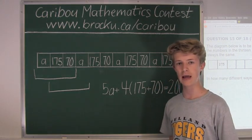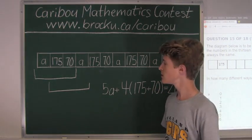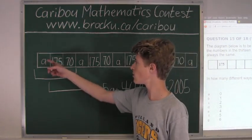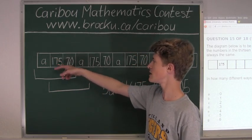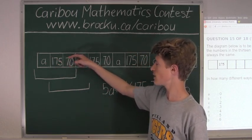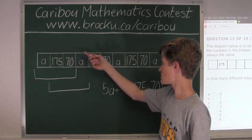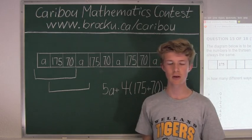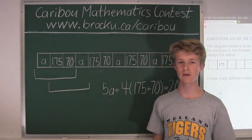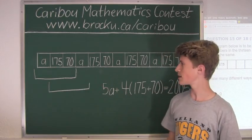So we would know that A could only be one number. So if we know that A can only be one number, 175 is given, and 70 is given, and we know that the sum of the group of three consecutive boxes is always the same, we know that there is only one possible way to complete this diagram.